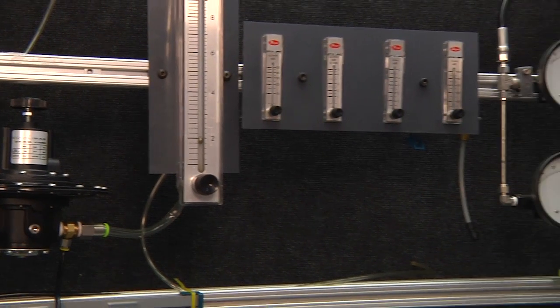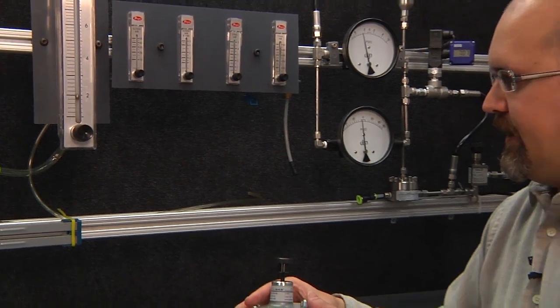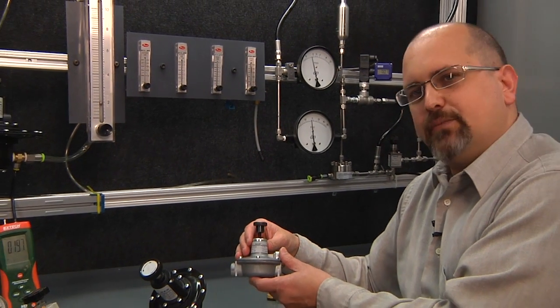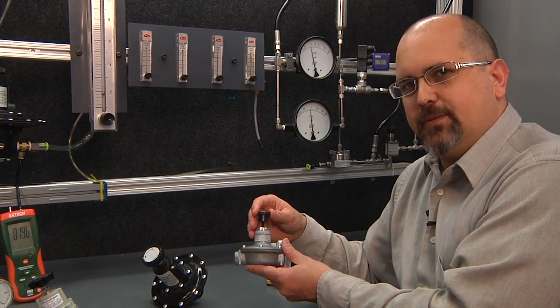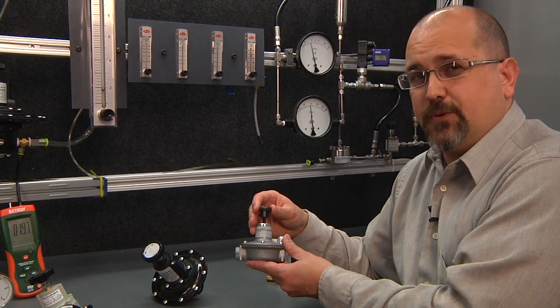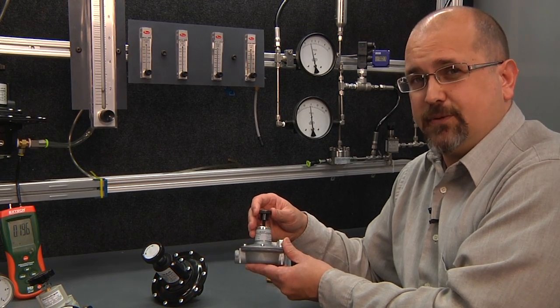Equilibar low pressure regulator models are available in various sizes and pressure ranges. This particular model is available from 0 to 6 inches of water column full scale adjustable range.